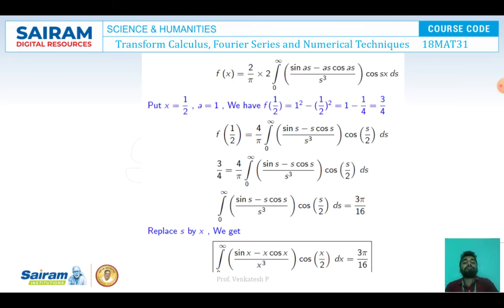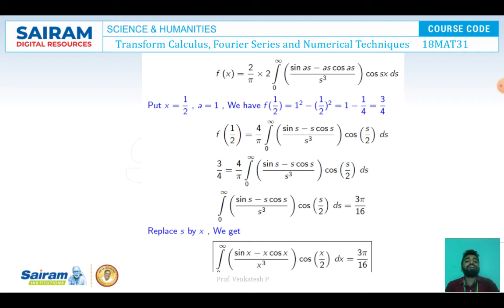Since cosine is an even function, f(x) = (4/π) ∫₀^∞ (sin(as) - as cos(as))/s³ · cos(sx) ds. Replacing x = 1/2 and a = 1: f(1/2) = (4/π) ∫₀^∞ (sin s - s cos s)/s³ · cos(s/2) ds. From the given function, f(1/2) = 1 - (1/2)² = 1 - 1/4 = 3/4. Therefore 3/4 = (4/π) ∫₀^∞ (sin s - s cos s)/s³ · cos(s/2) ds, giving ∫₀^∞ (sin x - x cos x)/x³ · cos(x/2) dx = 3π/16.